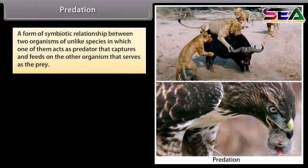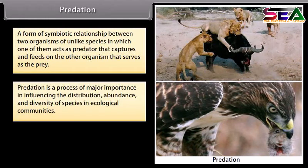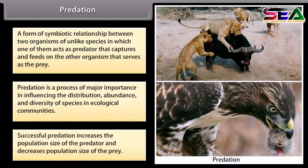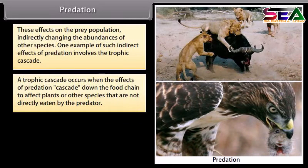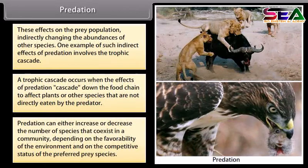Predation is a form of relationship between two organisms of unlike species in which one acts as predator — capturing and feeding on the other organism, which serves as the prey. Predation is a process of major importance in influencing the distribution, abundance and diversity of species in ecological communities. Successful predation increases the population size of the predator and decreases that of the prey. A trophic cascade occurs when the effects of predation cascade down the food chain to affect plants or other species not directly eaten by the predator.